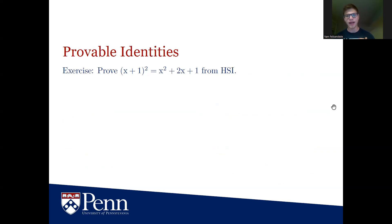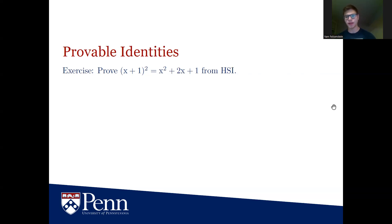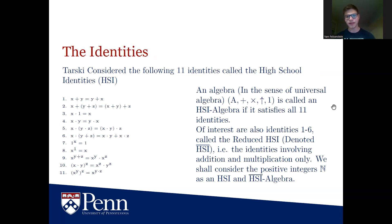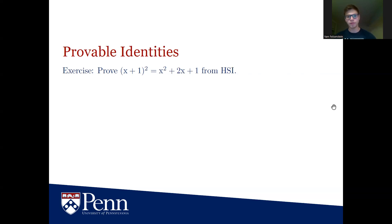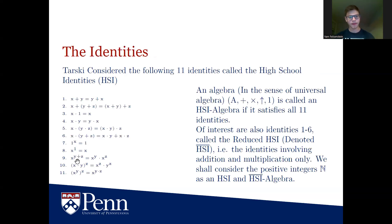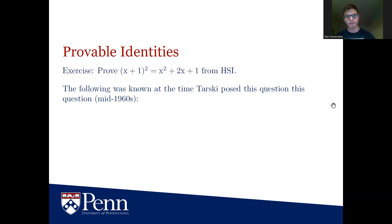This is a good place to talk about what we mean when we say a valid identity is derivable from the axioms. An identity being valid in the positive integers means it's some equation with variables such that whenever we substitute any positive integers for those variables, we get a true statement. For example, x plus 1 squared equals x squared plus 2x plus 1 is valid. Deriving it means we start from the left-hand side and, using only these 11 rules, work to the right-hand side — for instance, using law 9 and distributivity.